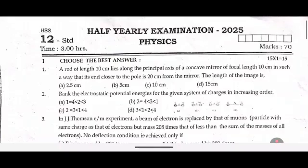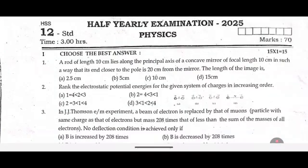Let's go to the first section — choose the correct answer. First one: A rod of length 10 cm lies along the principal axis of a concave mirror of focal length 10 cm, in such a way that its end closer to the pole is 20 cm from the mirror. The length of the image is dash.